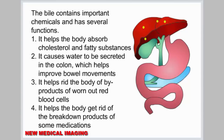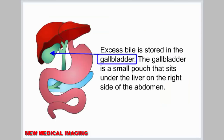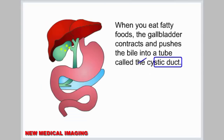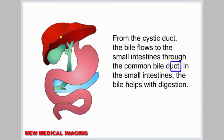Bile also helps the body get rid of the breakdown products of some medications. Excess bile is stored in the gallbladder, which is a small pouch that sits under the liver on the right side of the abdomen. When you eat fatty foods, the gallbladder contracts and pushes the bile into a tube called the cystic duct. From the cystic duct, the bile flows to the small intestines through the common bile duct, where it helps with digestion.